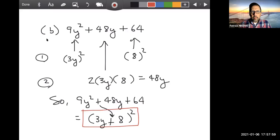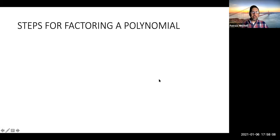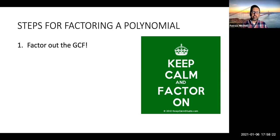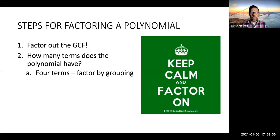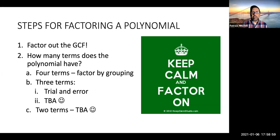To end this section, I'd like to start making a list of factoring steps. The steps for factoring a polynomial: Number one — keep calm and factor on, but the real step one is factor out the GCF if there is one. Step two, ask yourself how many terms your polynomial has. If it has four terms, that's grouping (Section 6.1). If there are three terms, you can do it by trial and error — Sections 6.2 and 6.3. There is another way, which I'll show you in the next video. And later in Section 6.5, we'll talk about factoring binomials.